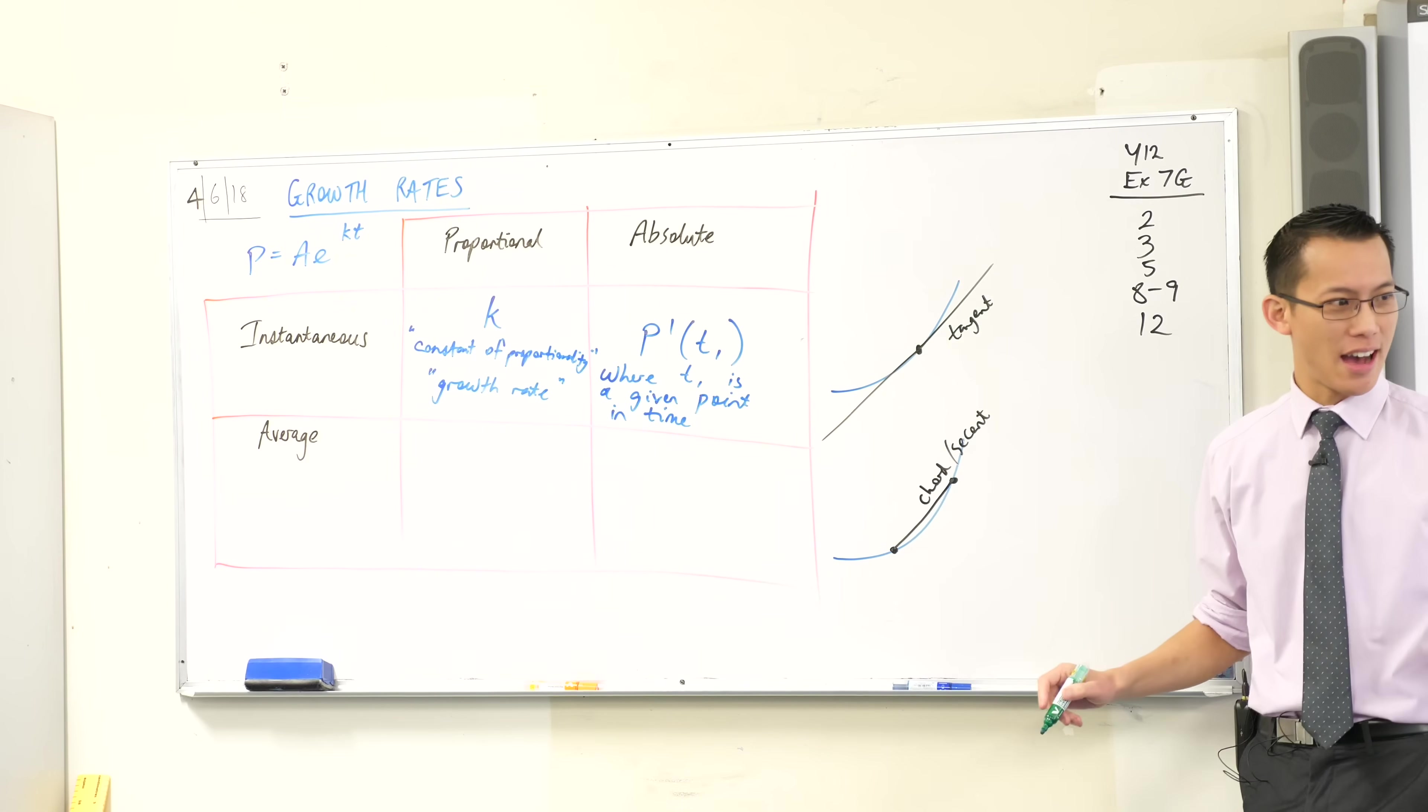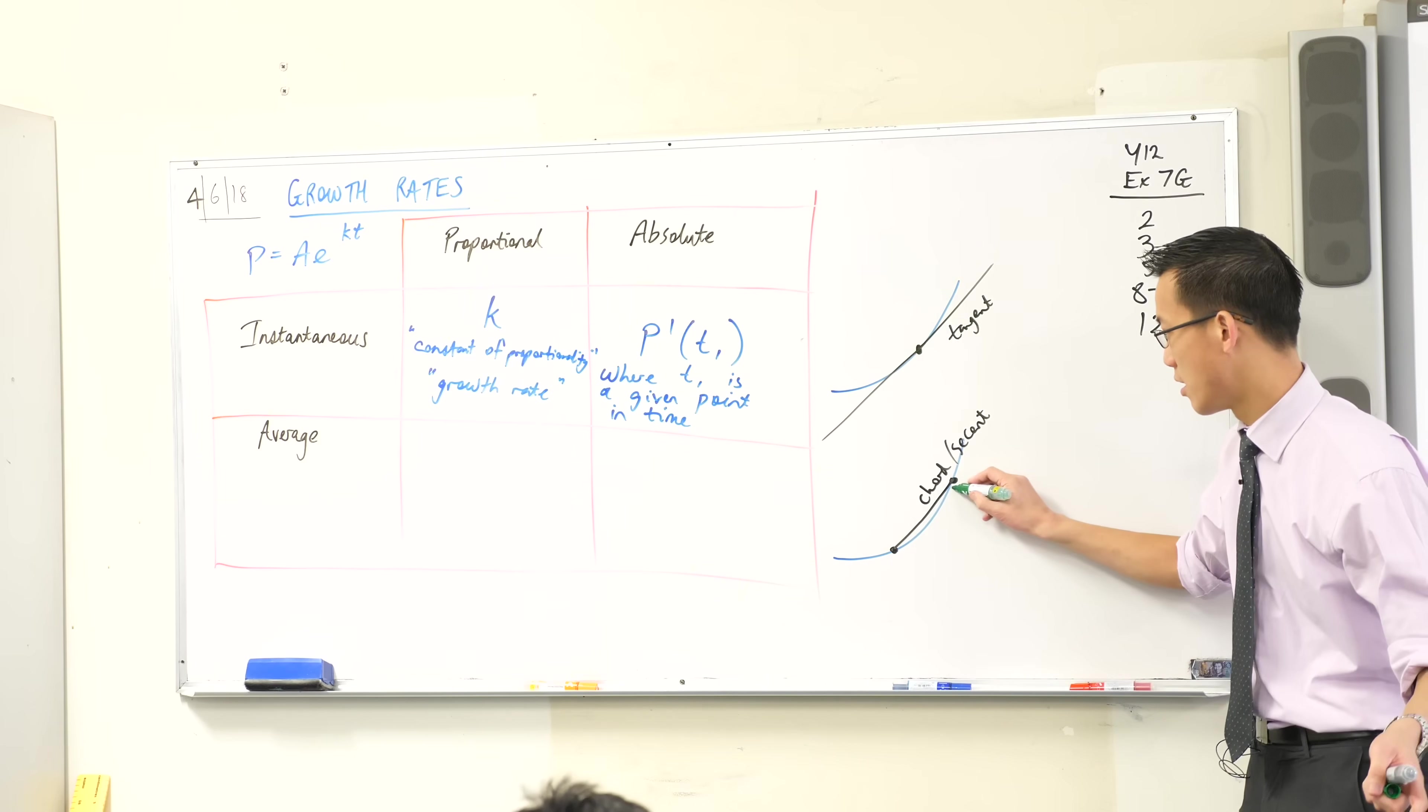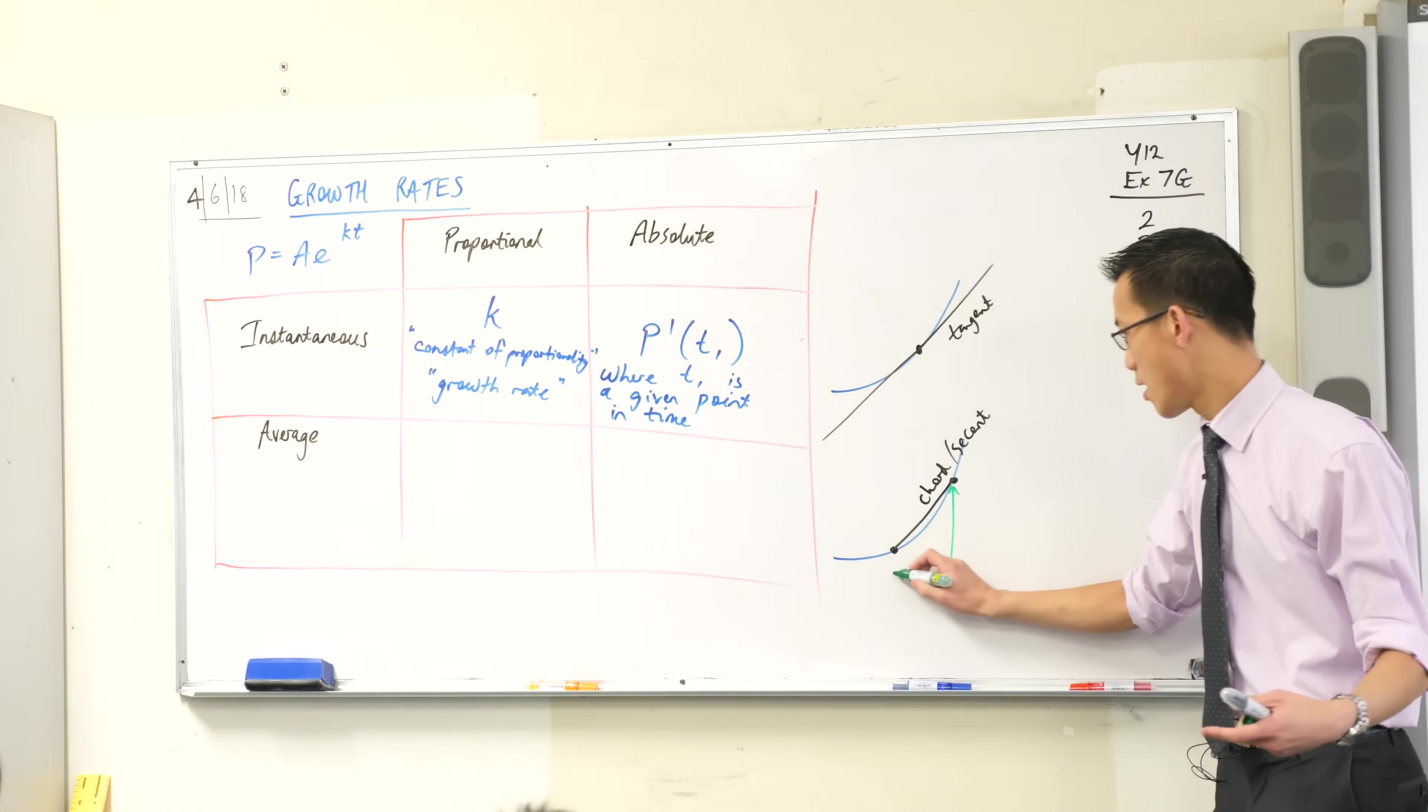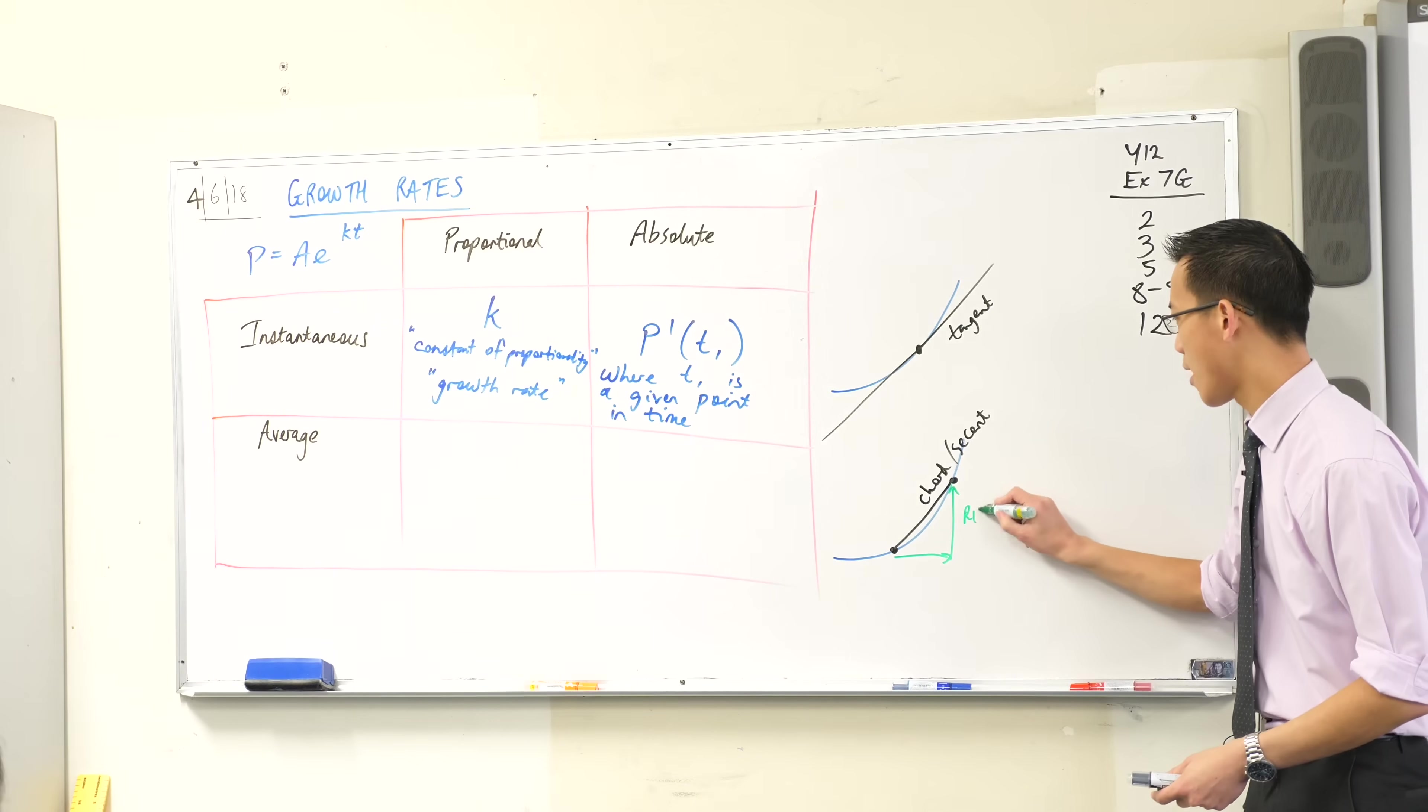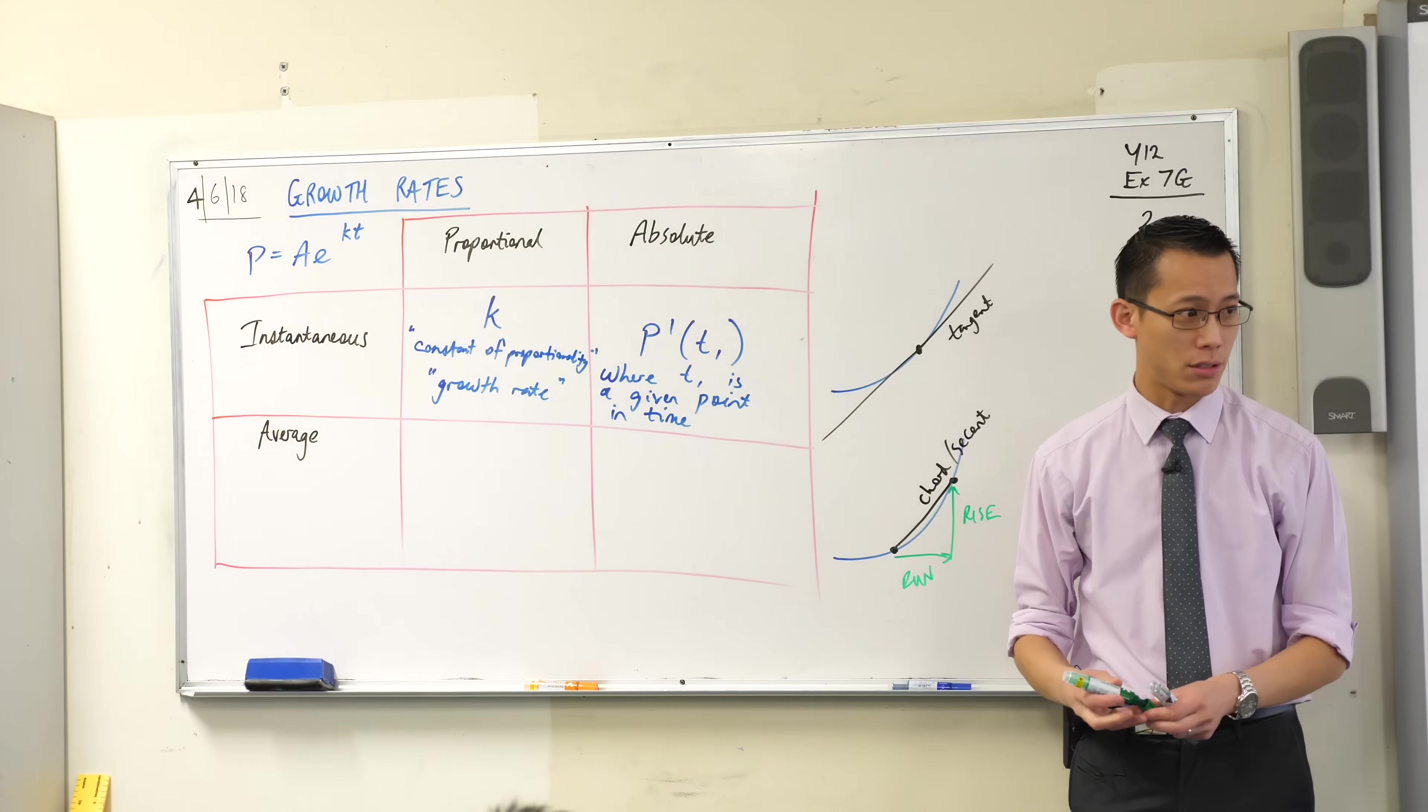I would need two pieces of information. To work out gradient, if I've got two points, I'm going to need the rise, and I'm going to need the run, both of which I can get from the coordinates. So I'm going to find out rise, and then I'm going to find out run, and then I'm going to divide. That's all I have to do.